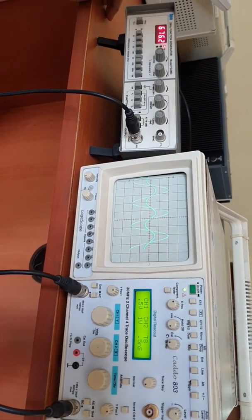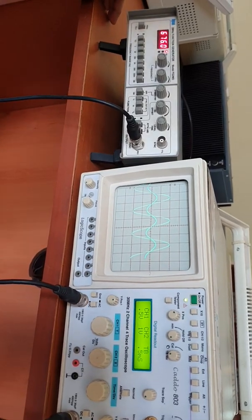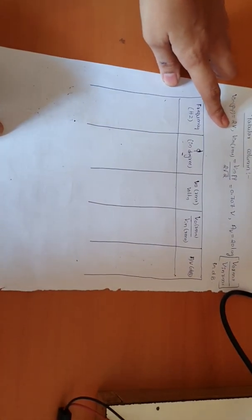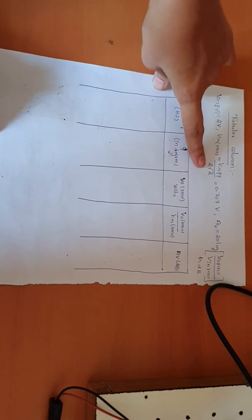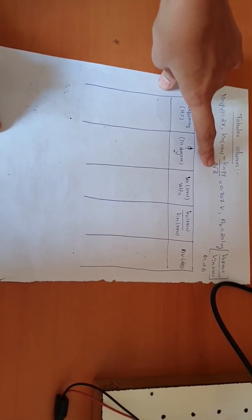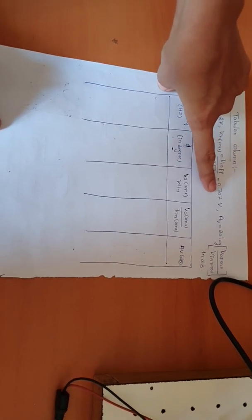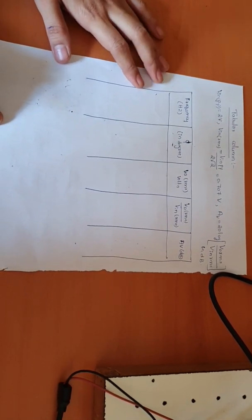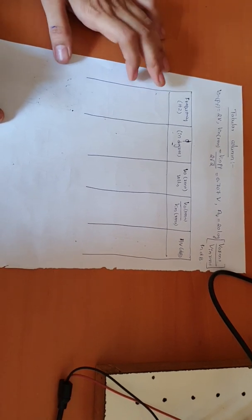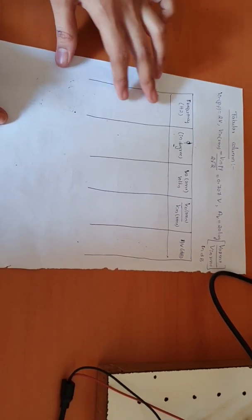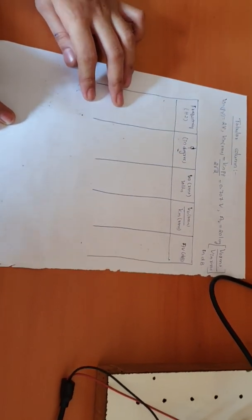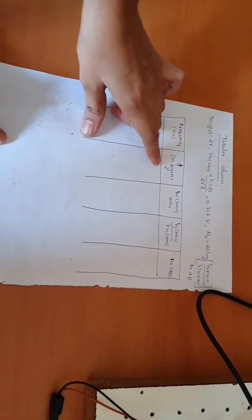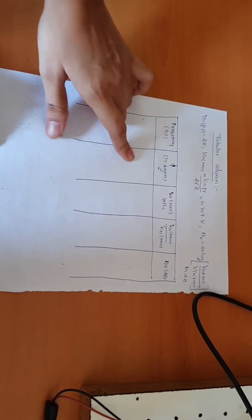For taking the readings, we use the Lissajous pattern. This is the tabular column for recording readings. The input voltage is 2 volts peak to peak as set on the signal generator, and the RMS voltage is found by dividing V peak-to-peak by 2√2, giving V_RMS = 0.707 V. We also use the gain formula for calculations. Readings are taken starting from a minimum frequency of 100 Hz, and the phase value is noted using the Lissajous pattern.